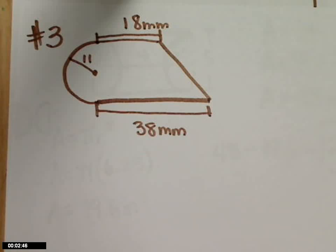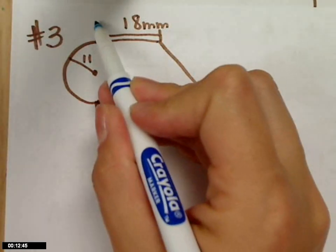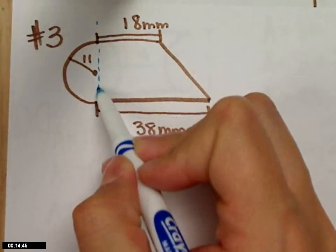Okay, so number three on page 41. What kind of shapes can we cut this into? Ooh, semicircle and a what? Trapezoid, right? So I think I'm going to cut right along this line.